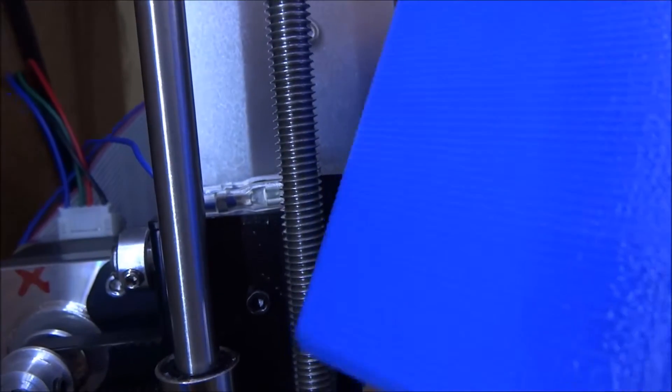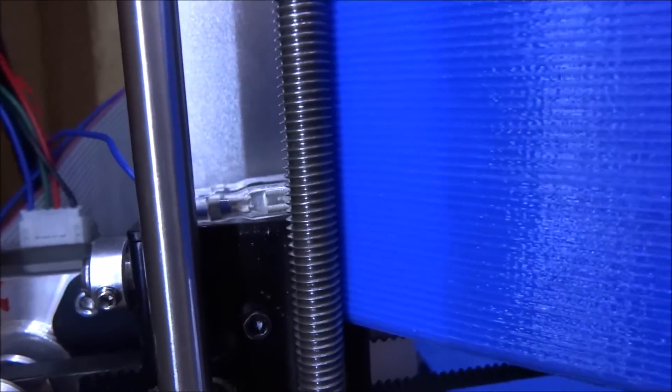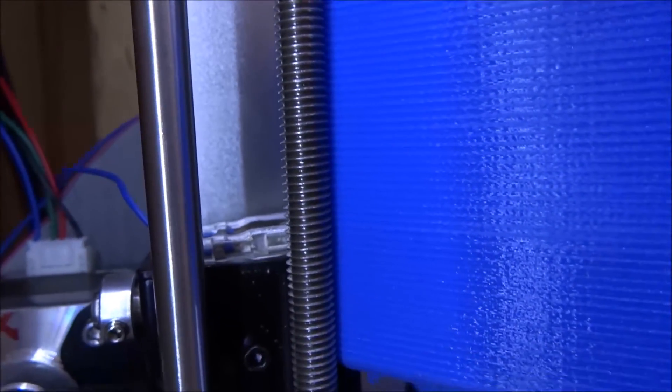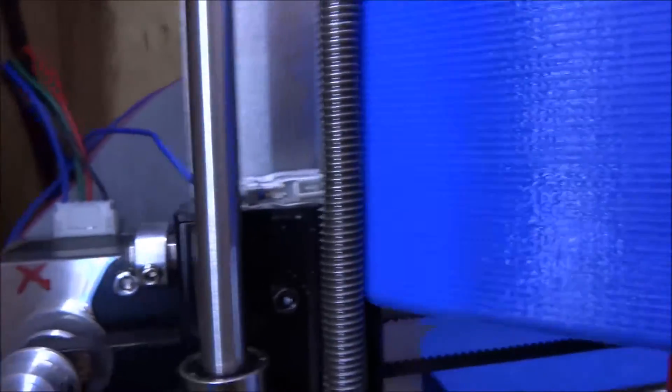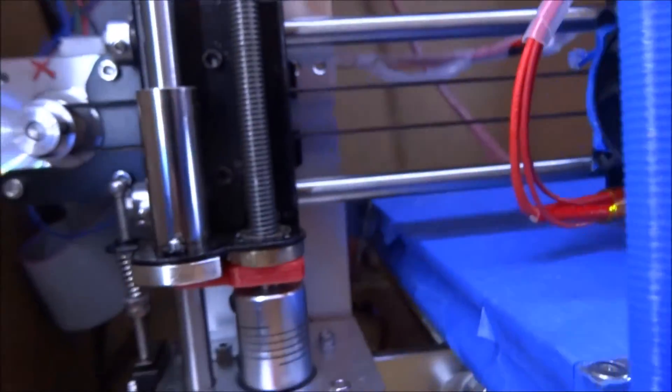As you can see on that plate, you can see a z-axis wobble. And amazingly enough, noticed that it matches the pitch of the thread. So it's going, you know, round and round as the thread turns.